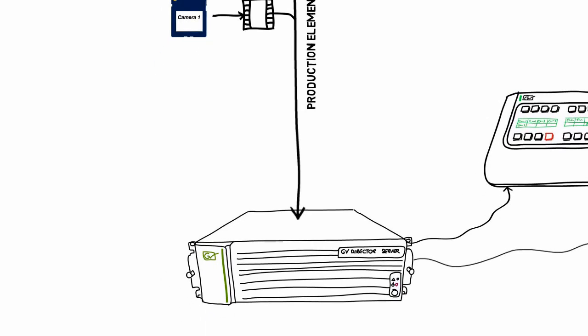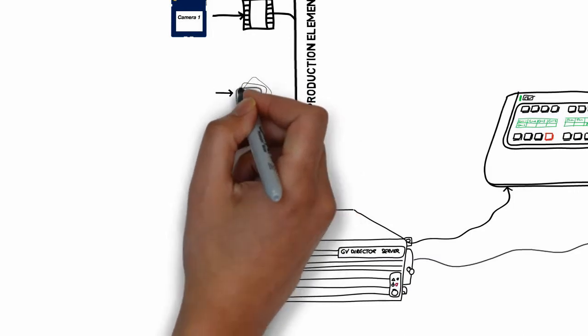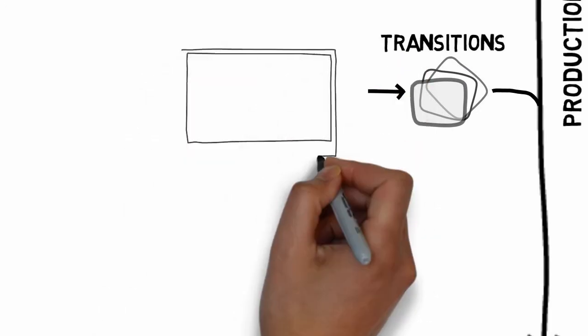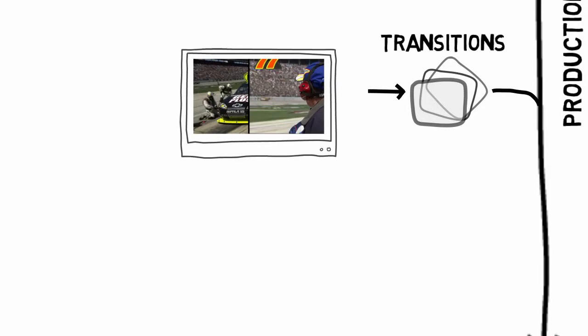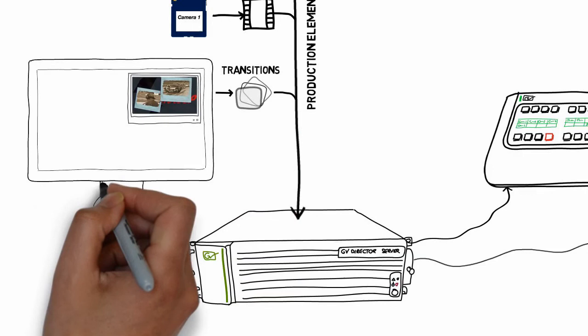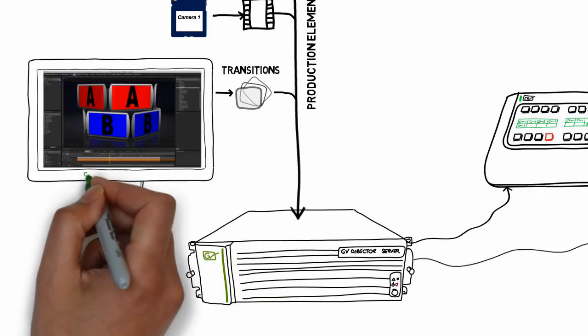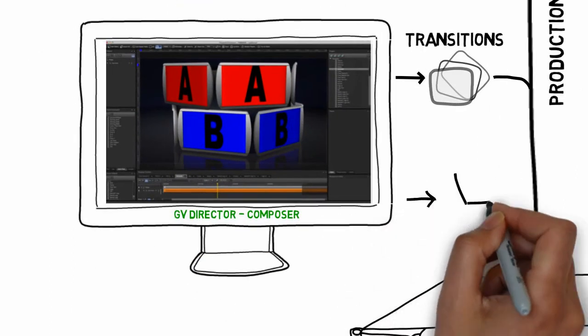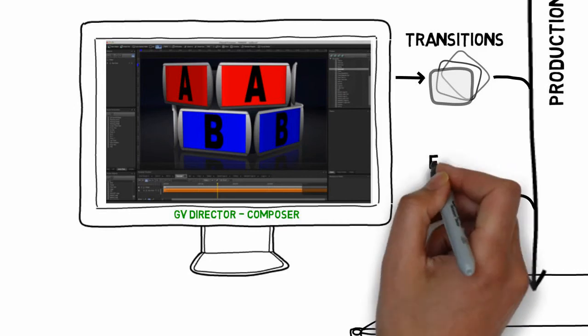Now, cutting leads us to our third production element type: transitions. We will certainly want more than just cuts in some shows to get the look we want. We may want a mix, a wipe, and even more complex 2D and 3D transitions like the carousel effect you see here, or maybe a photo effect, perhaps with a sepia colour change. GV Director comes with a set of preset transitions, but — and here's the big advantage — it also comes with an application called GV Director Composer to create new transitions.